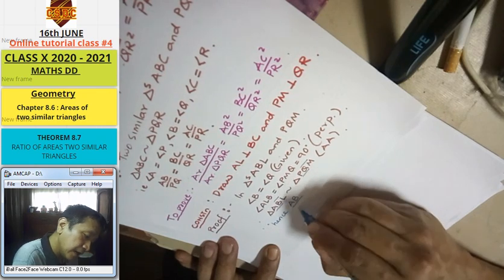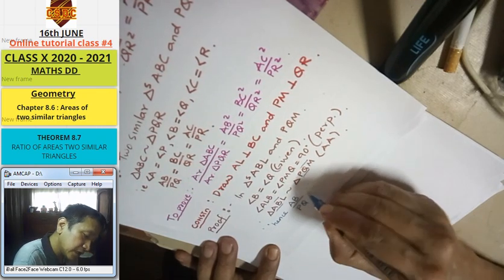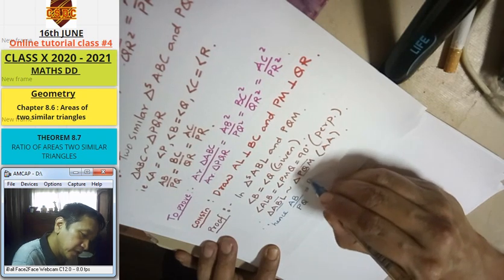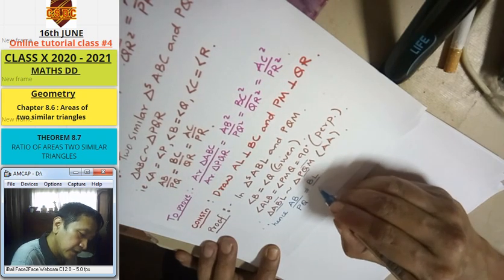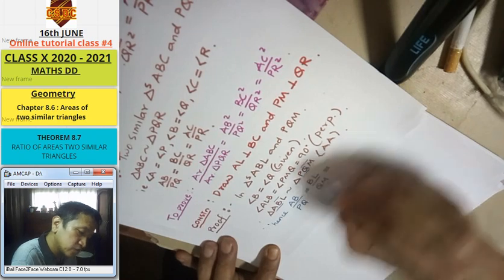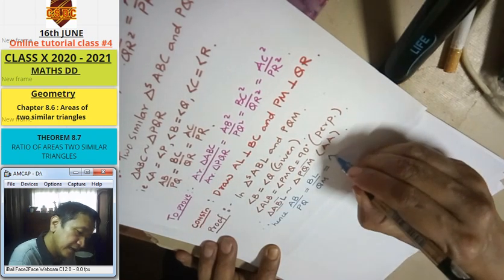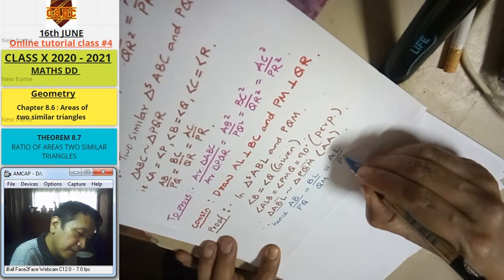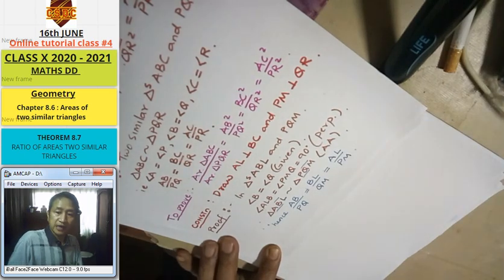Hence, AB by BQ equals BL by QM, which also equals LA by BM.